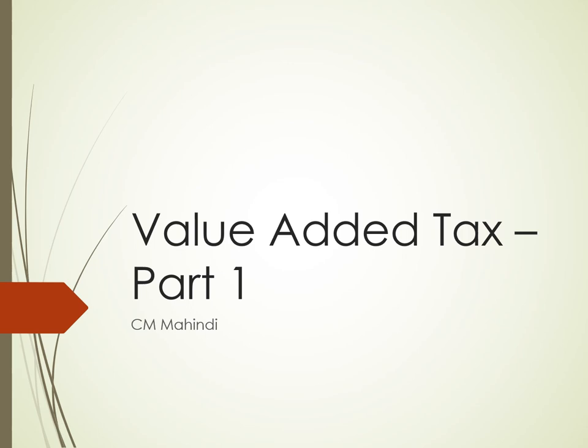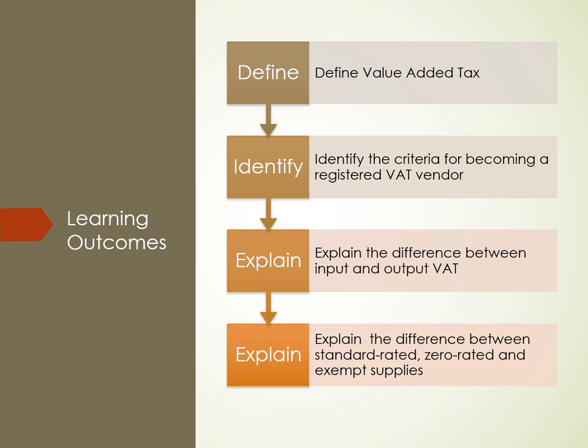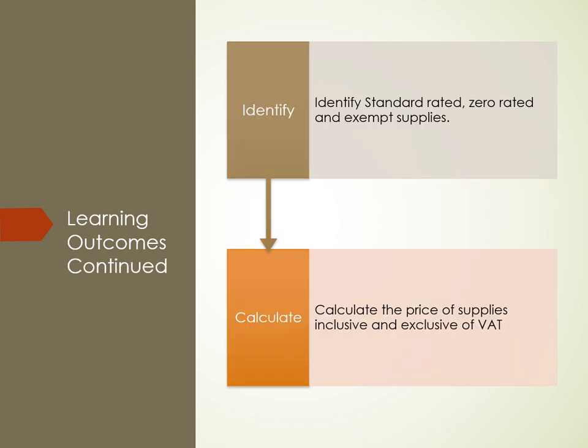Good day. Today we're looking at value-added tax. At the end of this unit you should be able to define value-added tax, identify the criteria for becoming a VAT vendor, explain the difference between input and output VAT, as well as explain the difference between standard rated, zero rated and exempt supplies. Further, you should be able to identify standard rated, zero rated and exempt supplies, and finally, calculate the prices of supplies inclusive and exclusive of VAT.